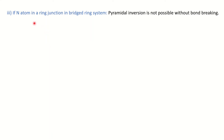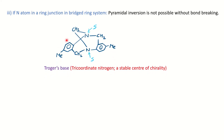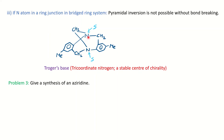The third possibility is if nitrogen is present at the ring junction in a bridged ring system — a tricoordinated nitrogen at a bridgehead. Here inversion cannot take place without bond breaking. Unlike simple amines where inversion occurred without bond breaking, here bond breaking would be required for inversion, so inversion cannot occur. It is configurationally stable, has a chiral center, and is optically active with all four different ligands.